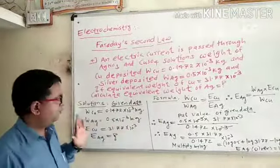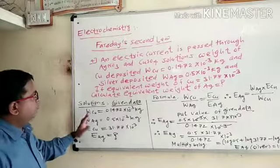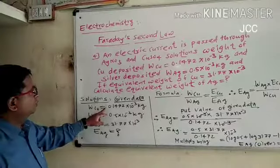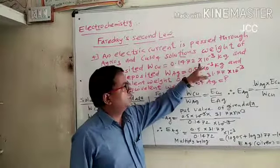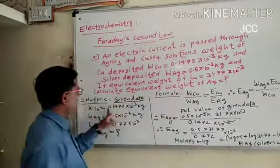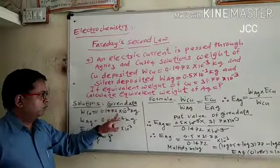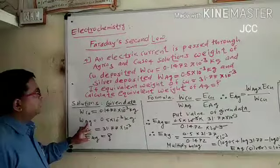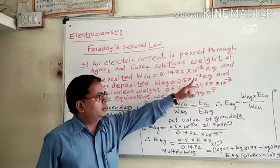Now we have the given data. WCu = 0.1472 × 10^-3. ECu = 0.1472 × 10^-3 kg. WAg = 0.5 × 10^-3 kg.